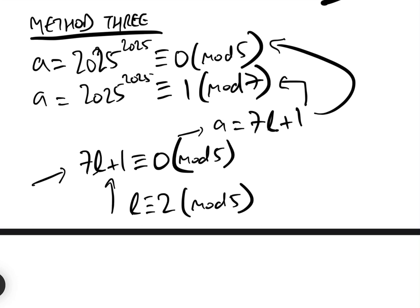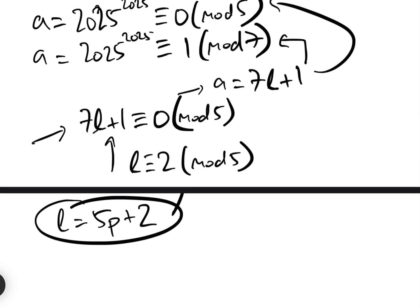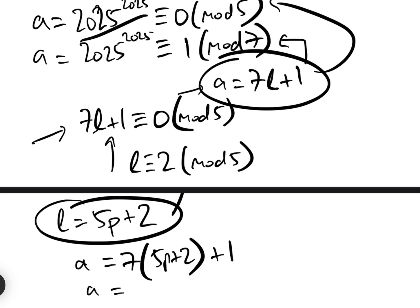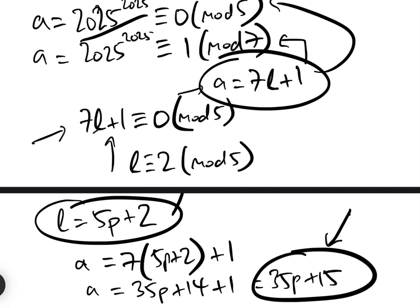And so therefore, we can rewrite L as equal to 5 times some P add 2, because it equals 2 mod 5. So therefore, it is 5P add 2. Putting this L back into this equation here, we have our answer A equals 7 times L, which is 5P add 2, add 1, and expanding this, we get A, which is what we want, which is 2025 to the power of 2025, equals 35P add 14 add 1, which is 35P add 15, which clearly when we divide by 35, that leaves us with just the 15 remainder. So all three methods give us 15.